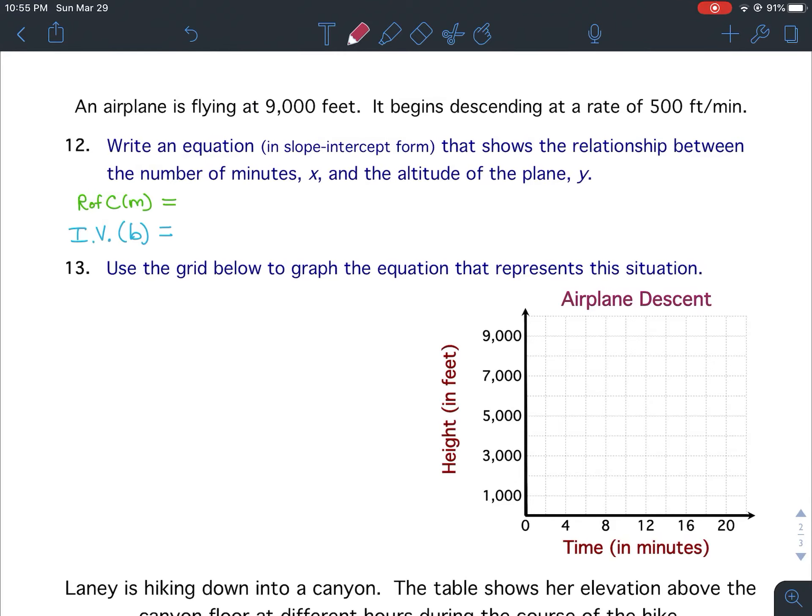Using Functions to Model Relationships Worksheet 15, questions 12 and 13. An airplane is flying at 9,000 feet. It begins descending at a rate of 500 feet per minute.